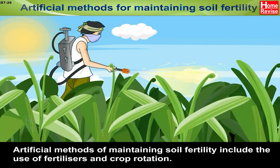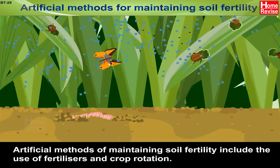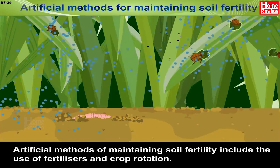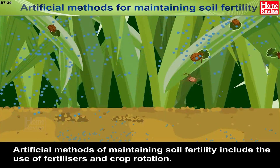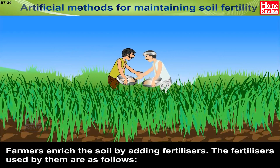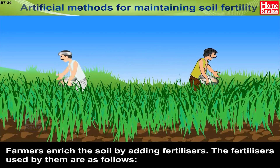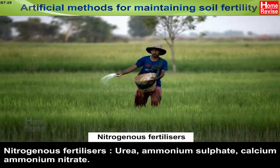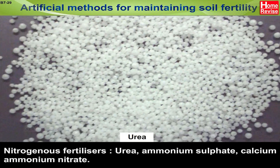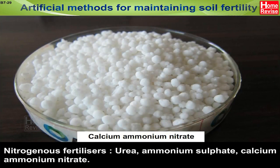Artificial methods of maintaining soil fertility include the use of fertilizers and crop rotation. Farmers enrich the soil by adding fertilizers. Nitrogenous fertilizers include urea, ammonium sulfate, and calcium ammonium nitrate.